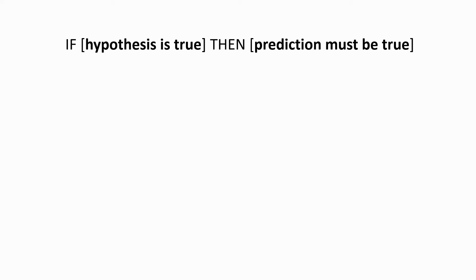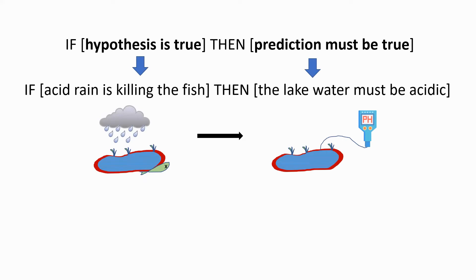To put this in the context of a hypothesis, we might say this. If the hypothesis is true, then the prediction it makes must be true. And this is fine. This is what we've been saying all along. So here's our example. If acid rain is killing the fish, then the lake water must be acidic.